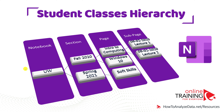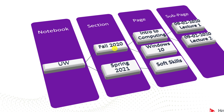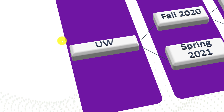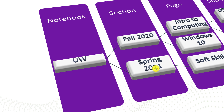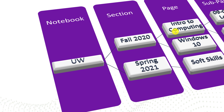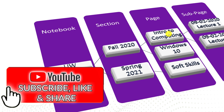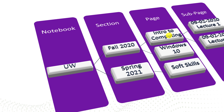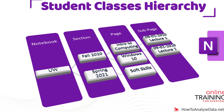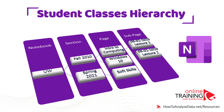If you are a student, this is how you might consider organizing your data. For example, if you study at the University of Wisconsin, you might have a notebook related to University of Wisconsin. Your two sections might be fall of 2020 and spring of 2021. In fall of 2020, you might be taking two classes — introduction to computing and Windows 10 — and organize your sub-pages as lectures from each class. Having the correct organizational structure will allow you to navigate through OneNote quickly and find what you're looking for very easily.